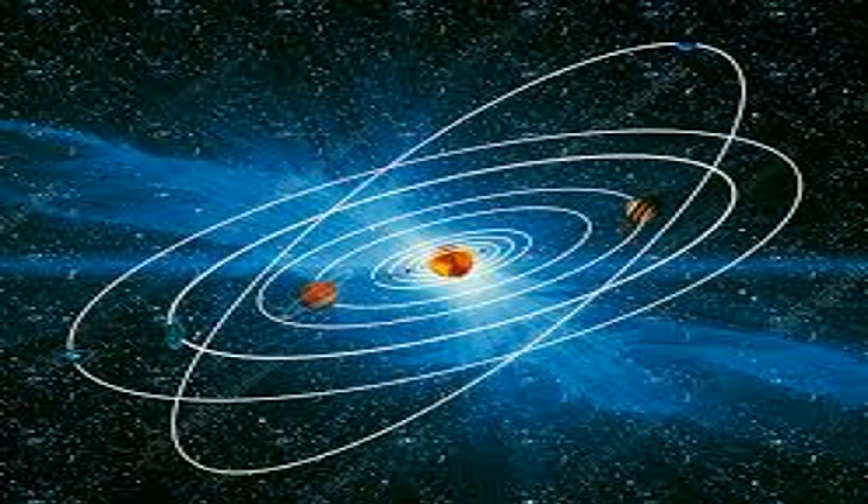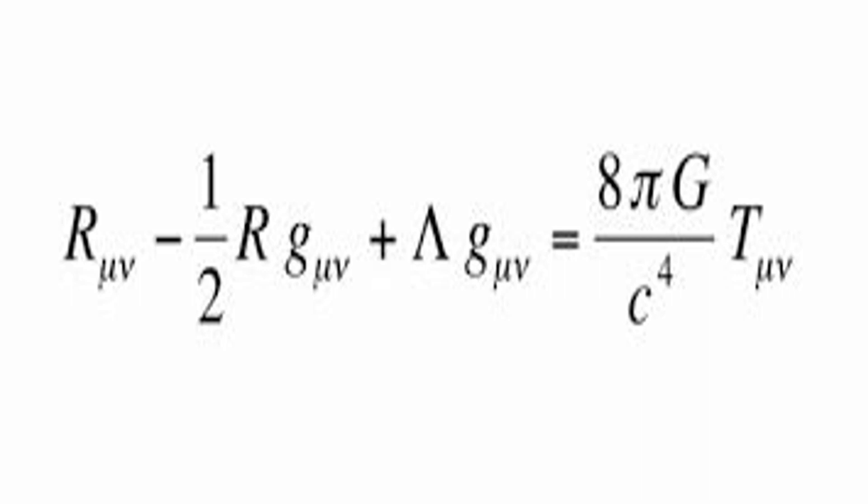After Einstein published his General Theory of Relativity in 1916, the solutions to his equation accounted for that very accurately, and that is why till today, this is held as the strongest proof that general relativity is correct.